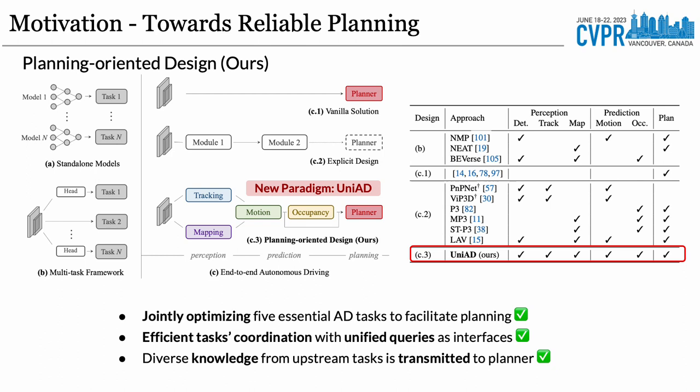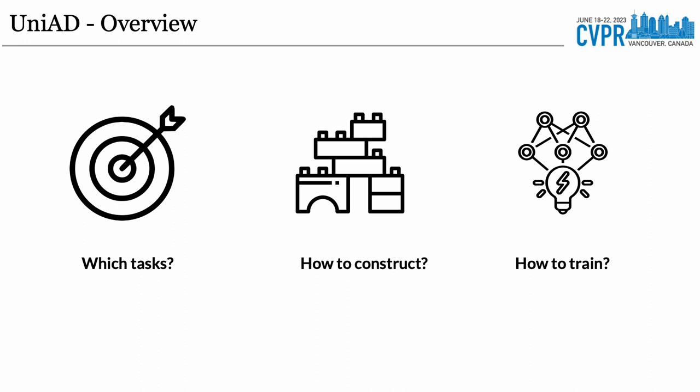Hence, we established the UniAD framework featuring the following properties. First, it jointly optimizes five essential autonomous driving tasks to facilitate planning, and enjoys efficient task coordination with unified queries. Therefore, the diverse knowledge from upstream tasks could be transmitted to the planner through these query connections.